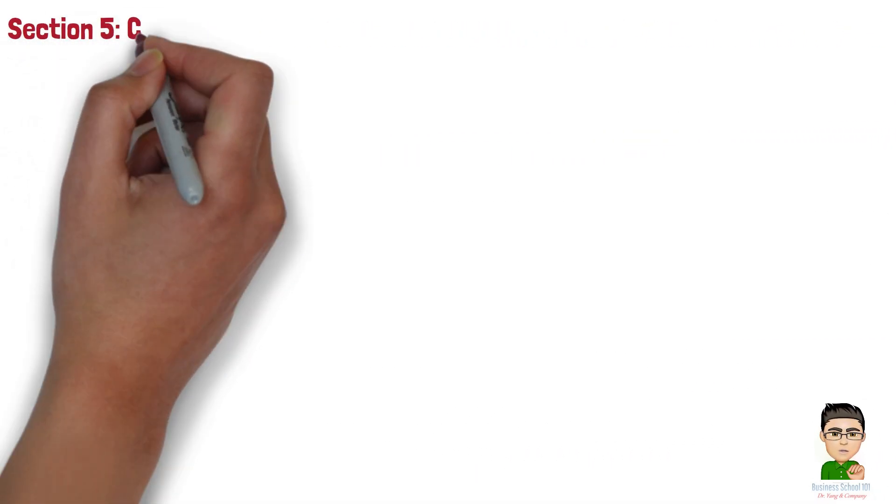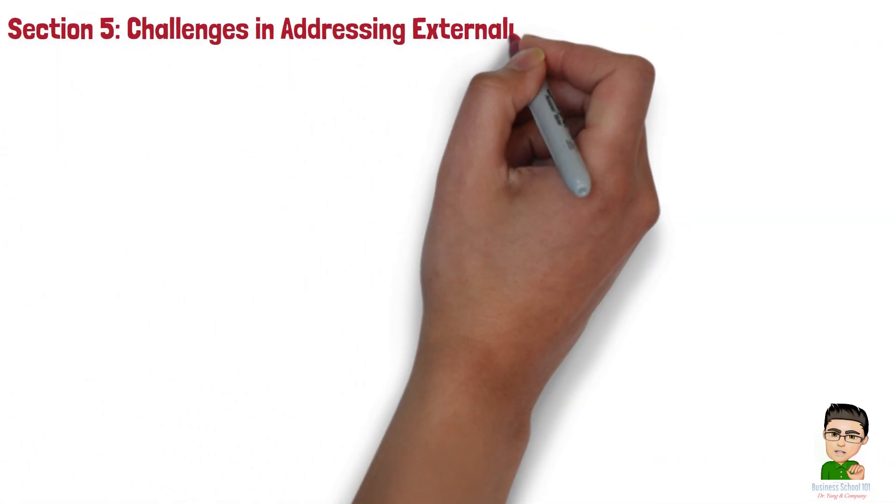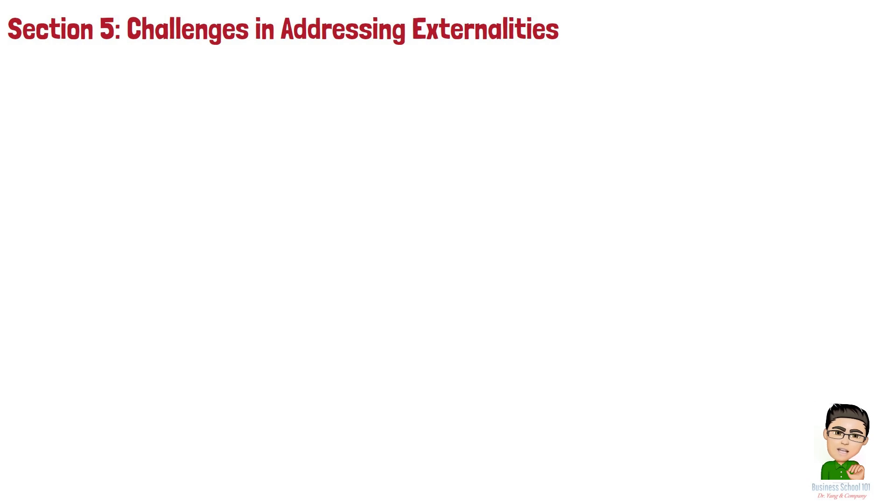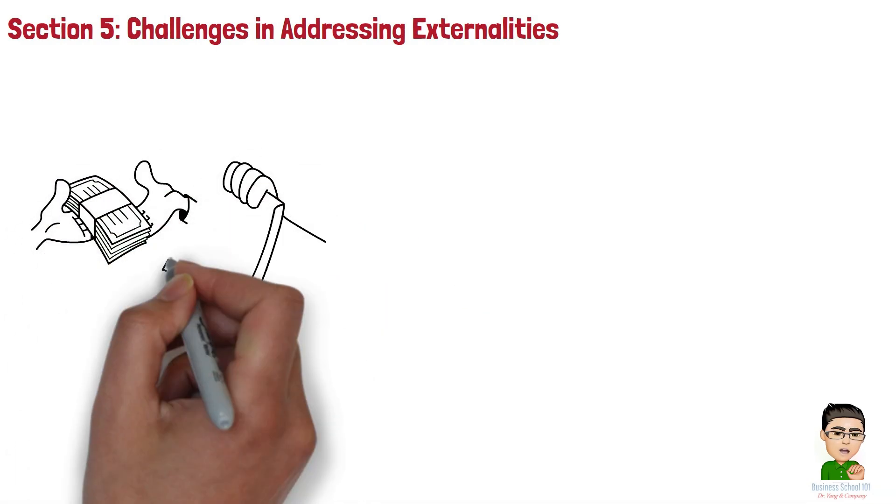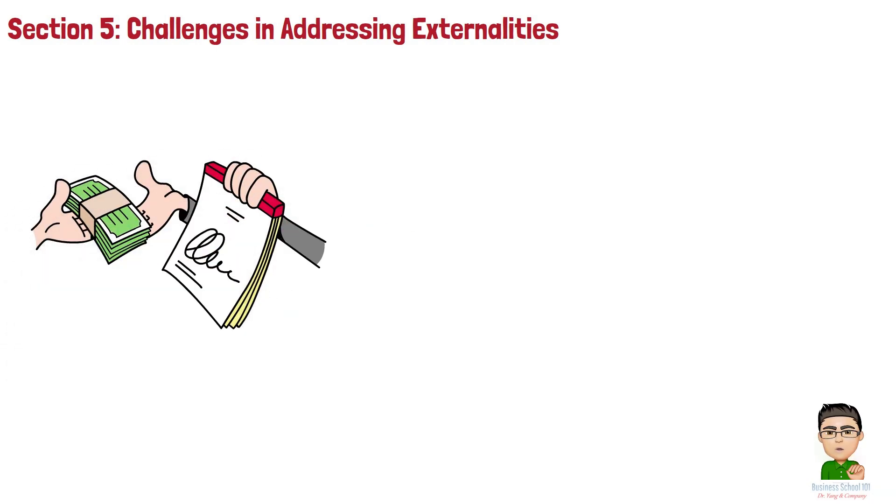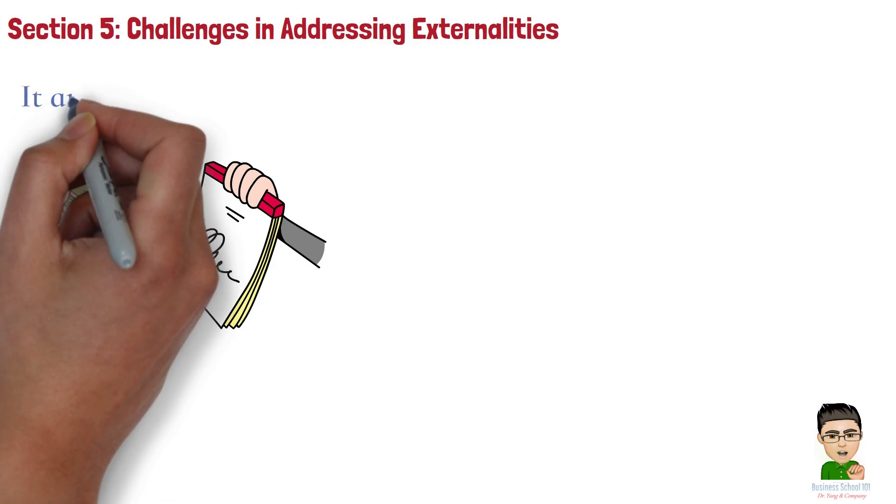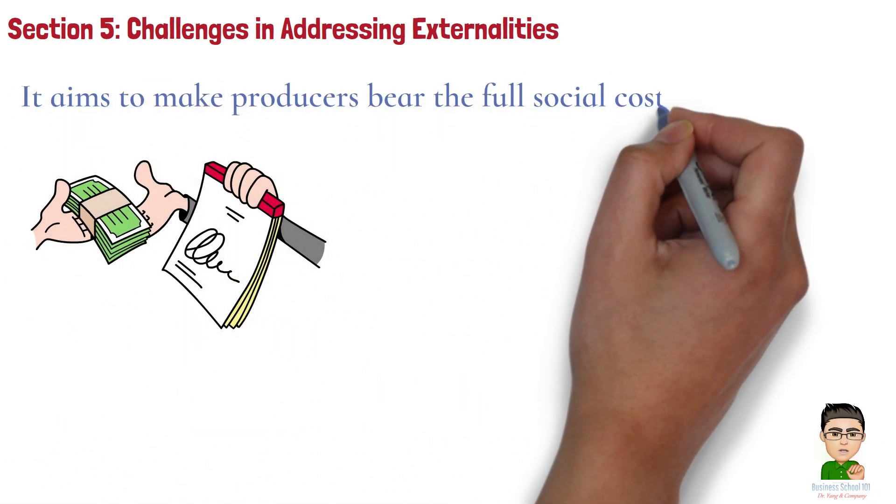Section 5. Challenges in Addressing Externalities. While government intervention can help correct externalities, it's not always easy. There are trade-offs to consider. When a government imposes taxes on activities that generate negative externalities, such as pollution, it aims to make producers bear the full social cost of their actions.